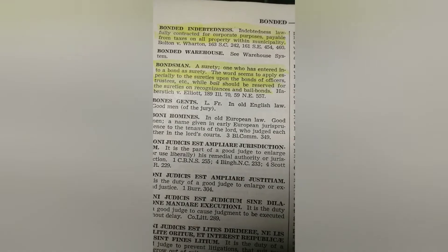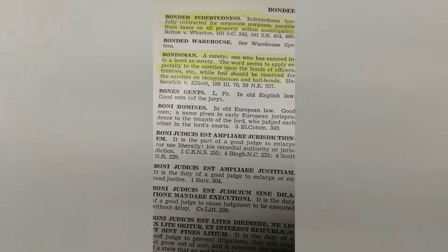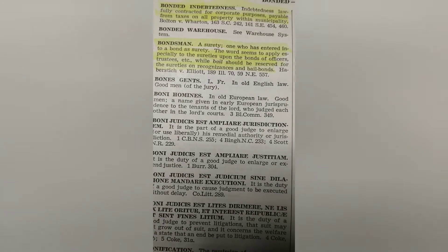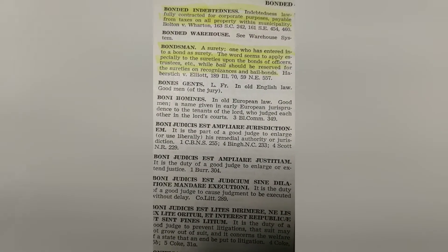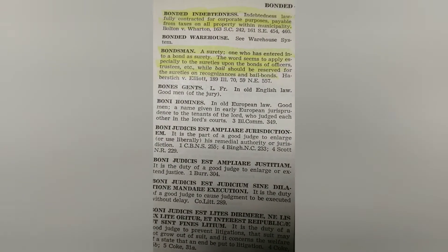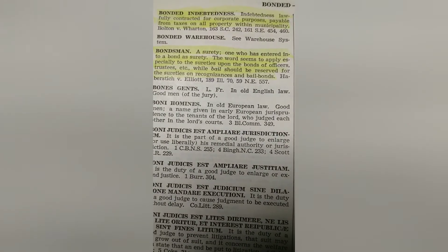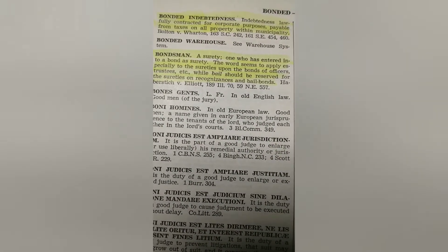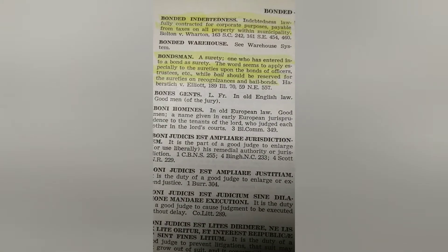Bonded indebtedness — exactly what he's talking about. Indebtedness lawfully contracted for corporate purpose, payable from taxes on all property within municipalities. So that's inside these invisible borders, these municipalities, these counties, these different jurisdictions that they're creating. These municipalities exist on paper.